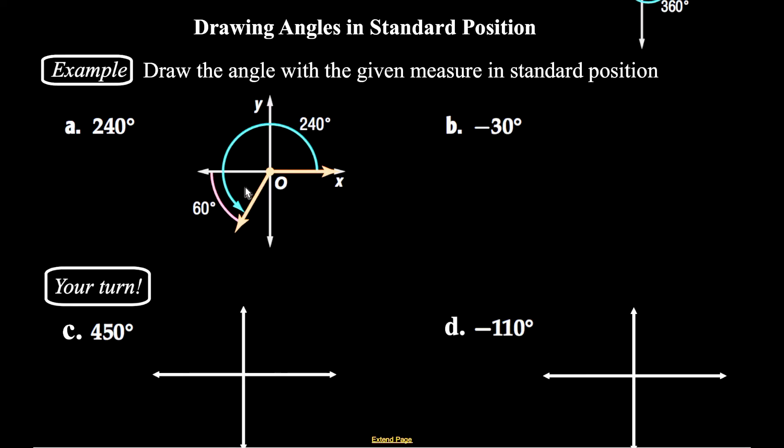A negative 30 degree angle would start on the x-axis, and it's going to have its terminal side in quadrant four, and you're only going to go down 30 degrees. So here's two for you to try. Draw in a 450 degree angle, and a negative 110 degree angle.